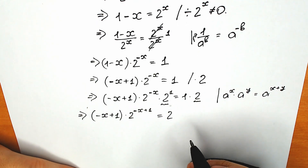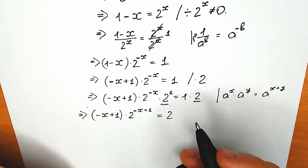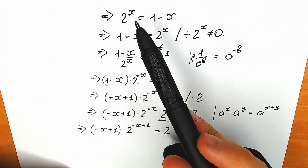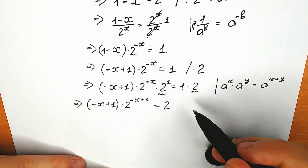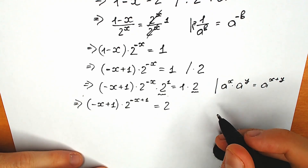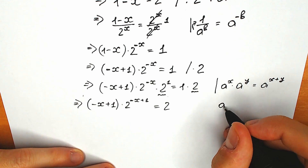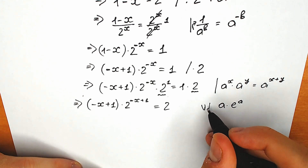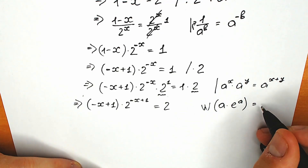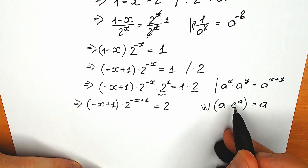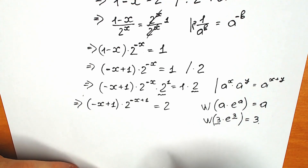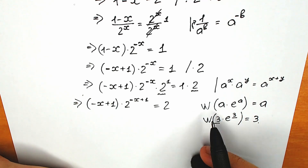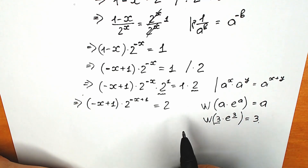A lot of students might ask why we do all this. Here's a quick answer. There's a really important function called the Lambert W function. Its structure is: when you have an expression a times e to the power a, you can apply the Lambert W function and the result is simply a. For example, with 3 times e to the power 3, applying Lambert W gives 3. So this function simplifies things a lot. We need to create that same structure on the left side.